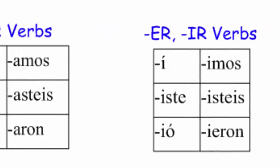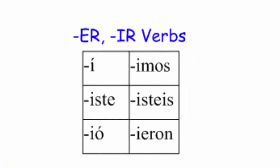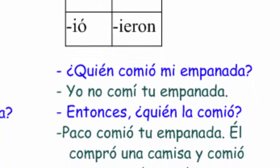Back to ERs and IRs. For example, a verb like comer — it means to eat. Let's do it first in Spanish: ¿Quién comió mi empanada? Yo no comí tu empanada. Entonces, ¿quién la comió? Paco comió tu empanada. Él compró una camisa y comió tu empanada anoche.